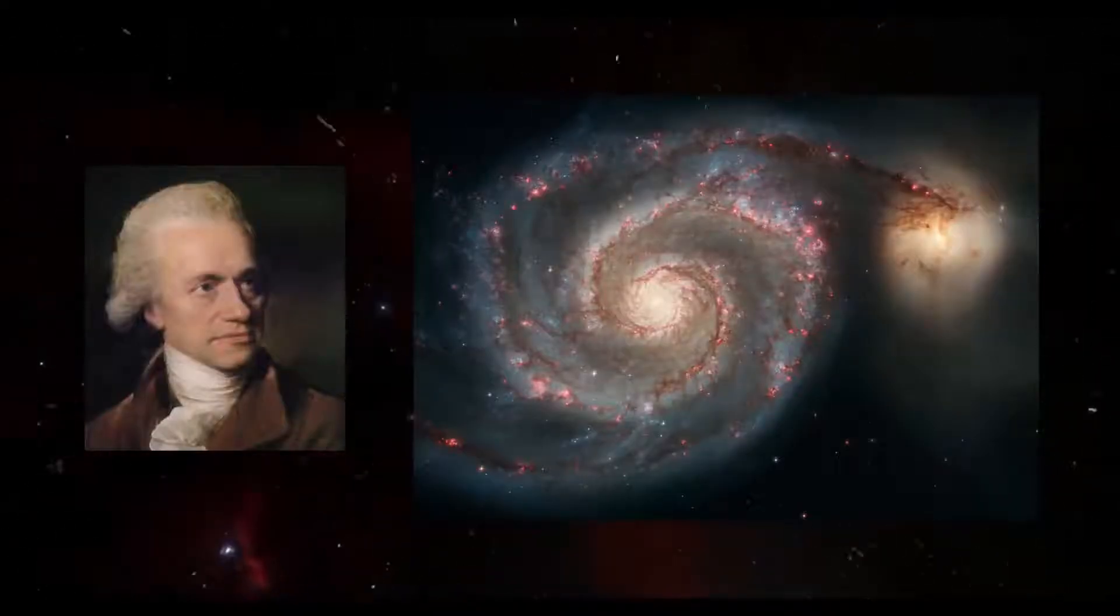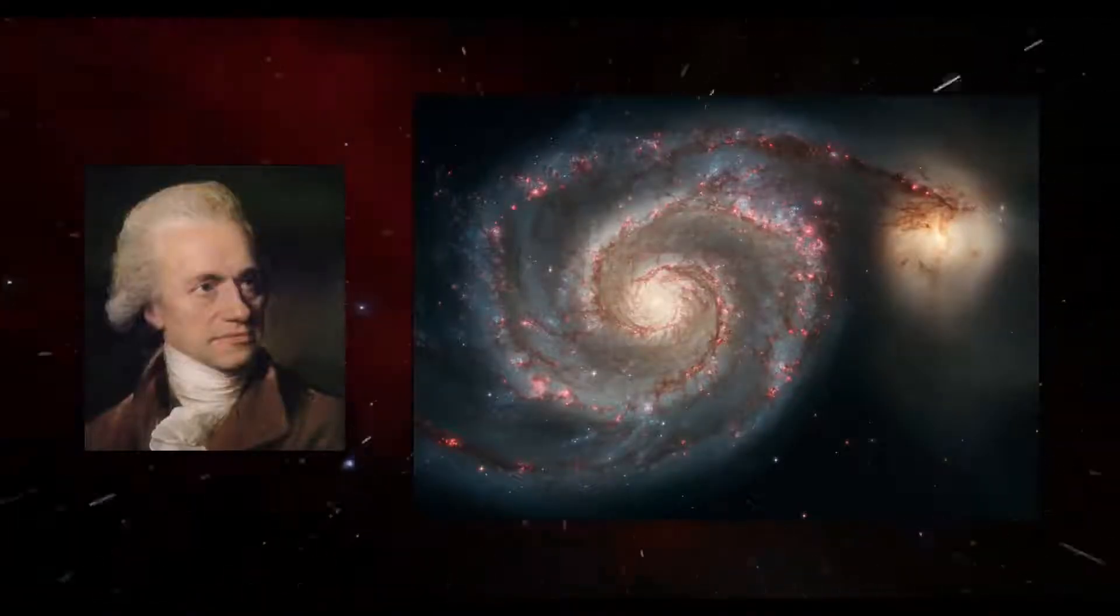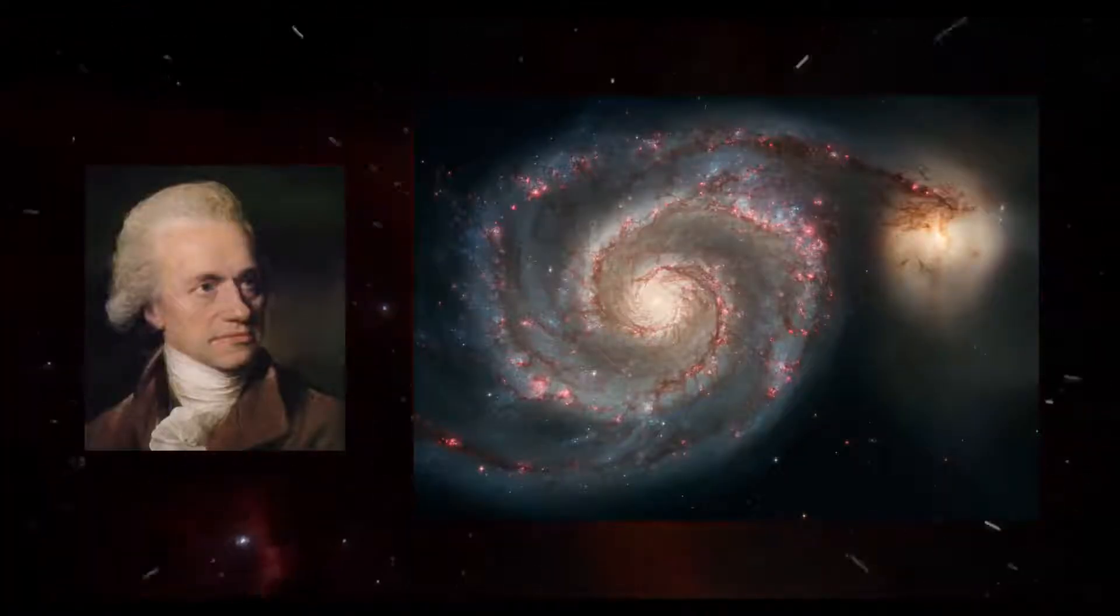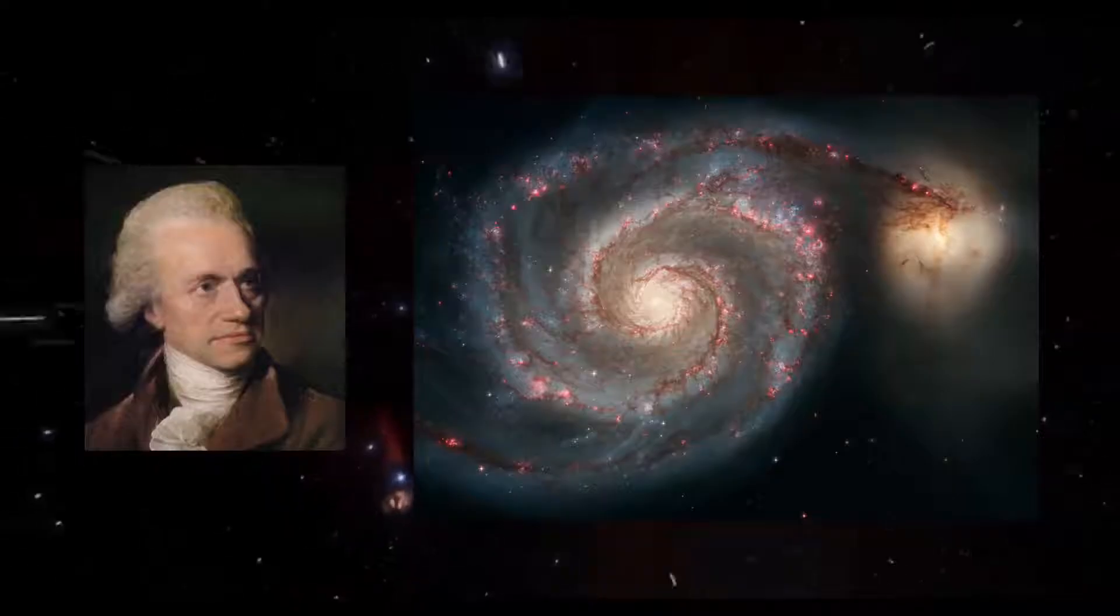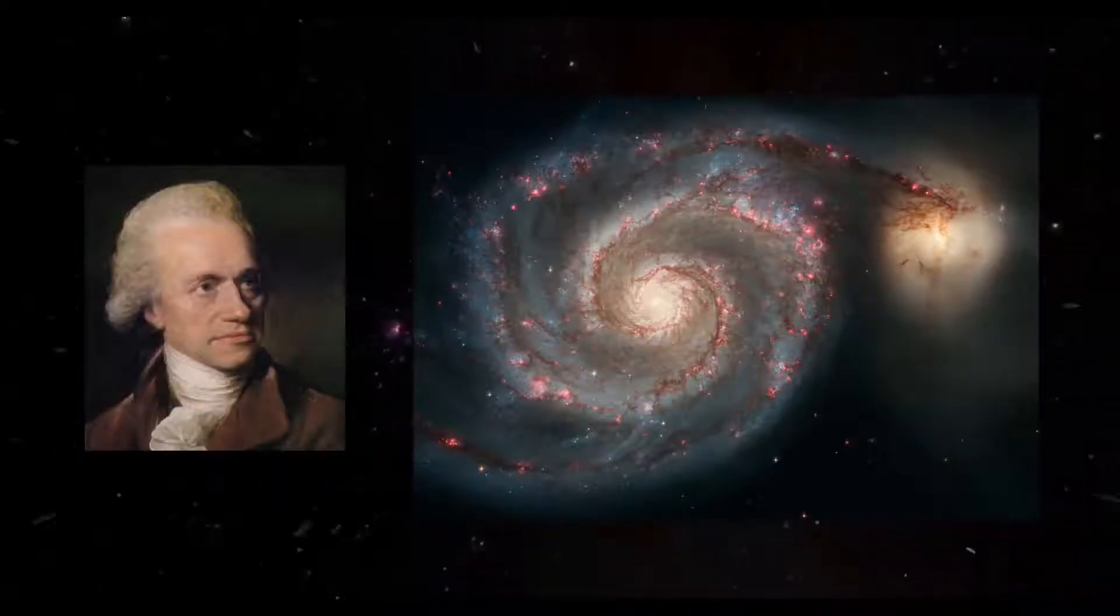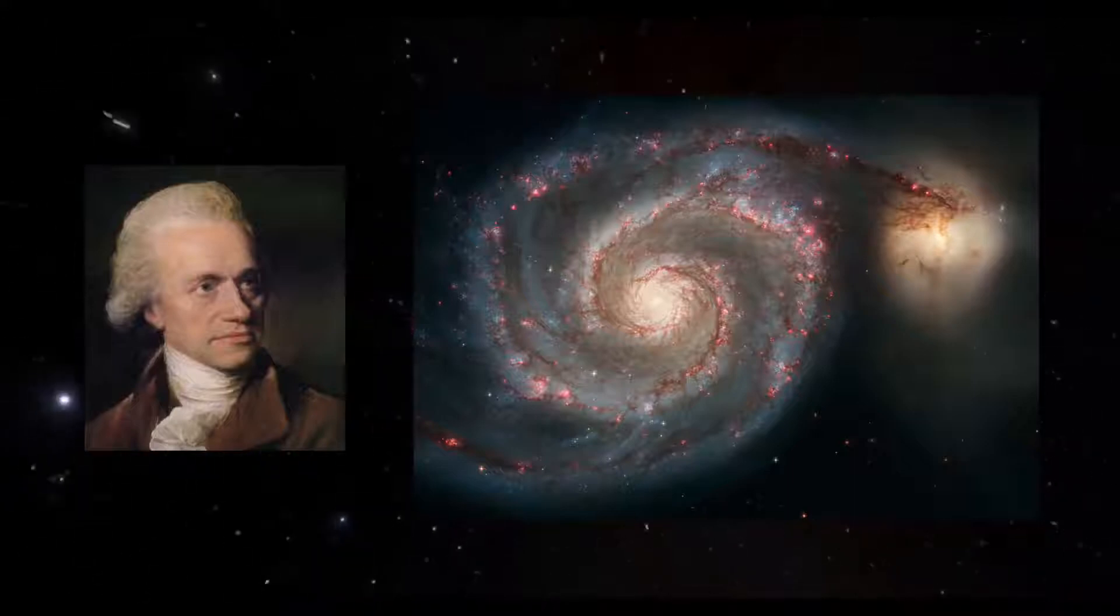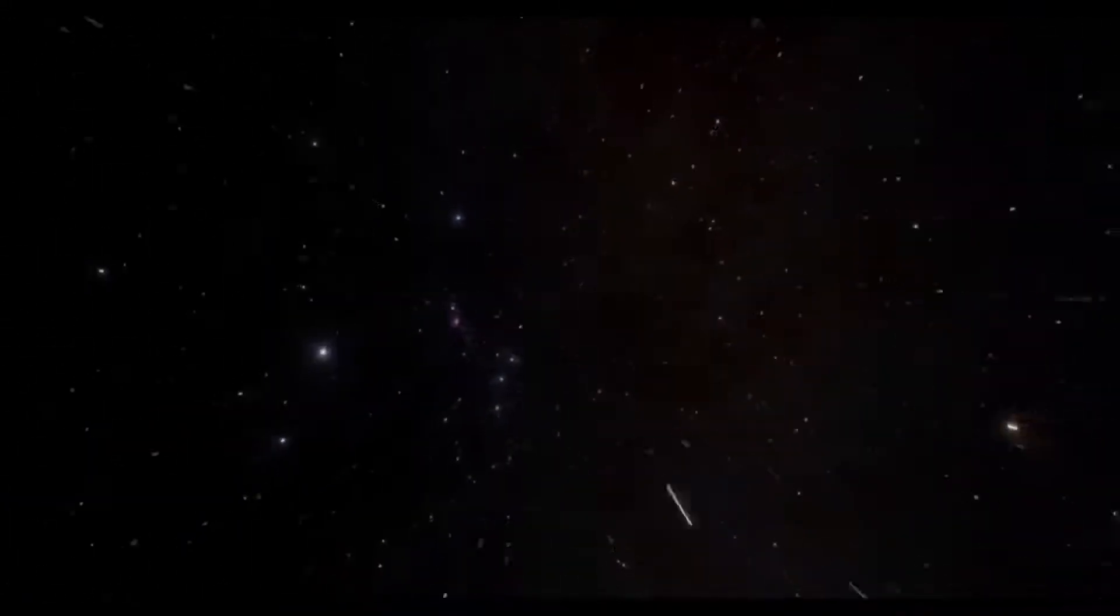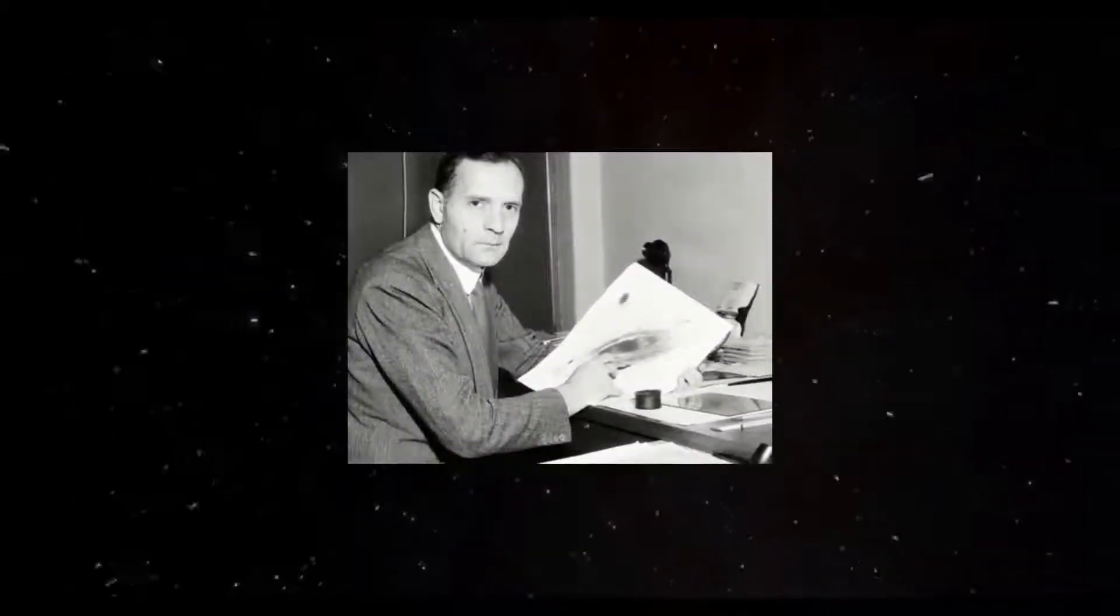But it was almost 300 years before astronomers figured out what the fuzzy spiral nebulae actually were. Some people argued that these nebulae were island universes, that is, objects like our Milky Way galaxy but external to it. The argument went on until the 1920s when the American astronomer Edwin Hubble finally measured the distance to one of these spiral nebulae.